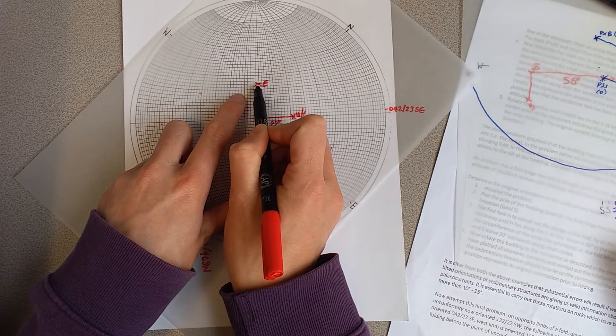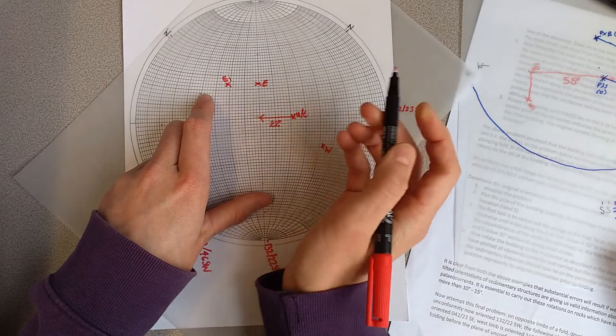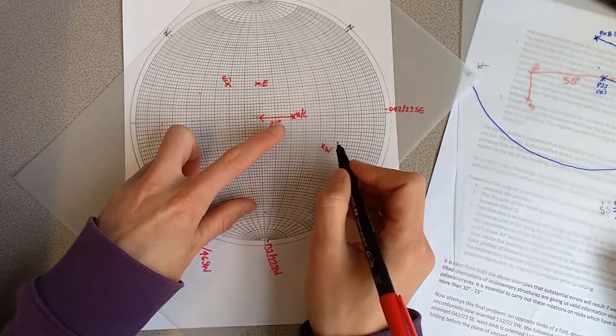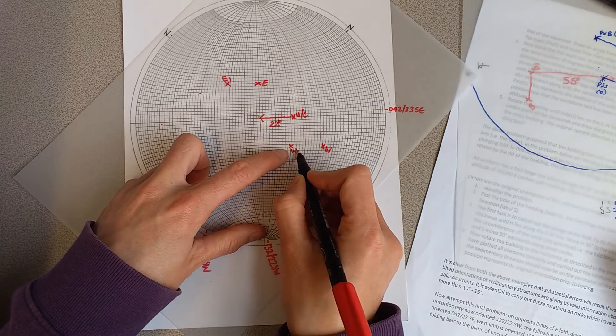If we do that, the east is going to be here—call that E1. And west is going to be here—W2.